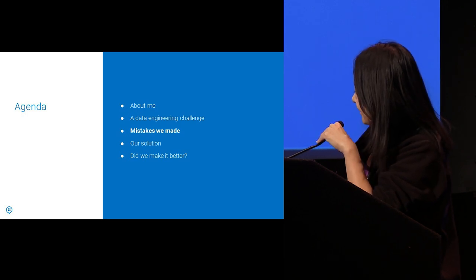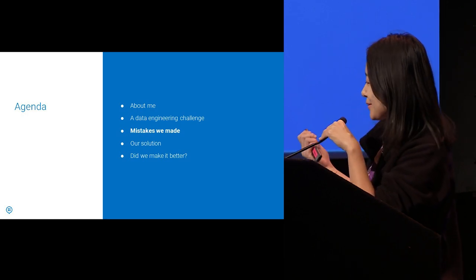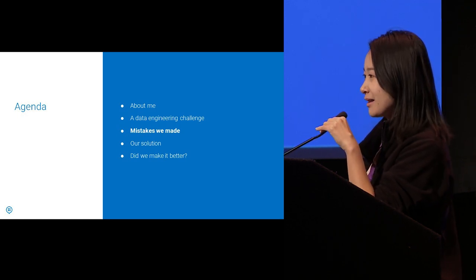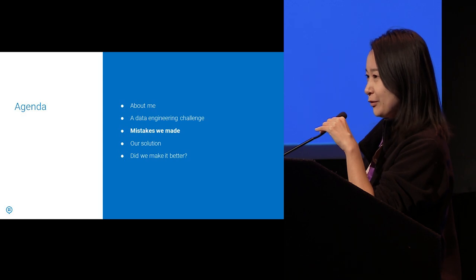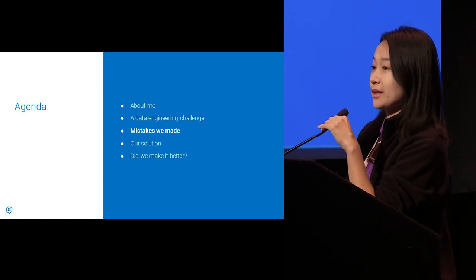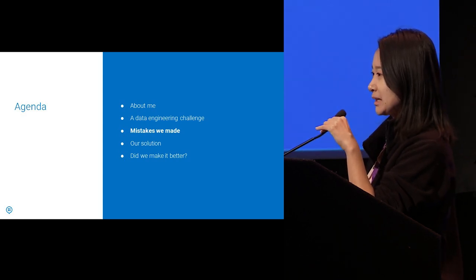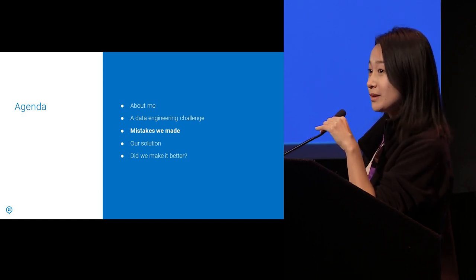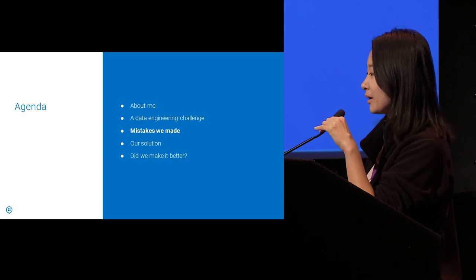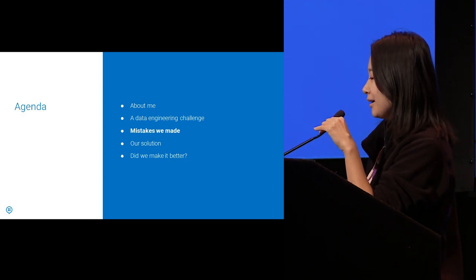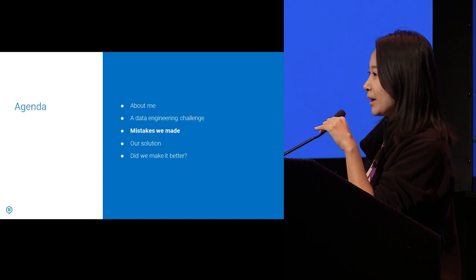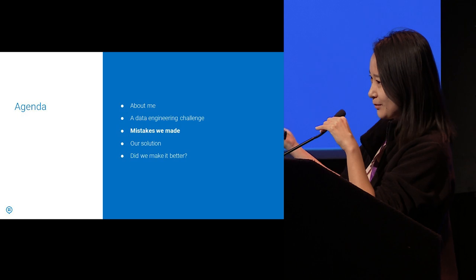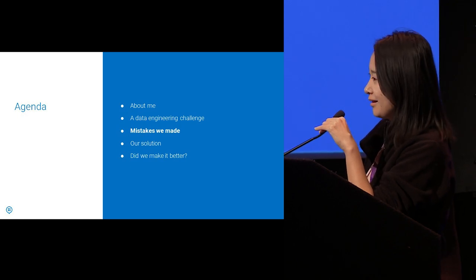Next up: the first time we tackled this problem, we made a few mistakes. Some historical context — at a startup, the first time you build out a financial data store is when you start making a sizable amount of money that warrants investing engineering resources. We thought at the time we only needed to support OLTP use cases, which, as you can tell from the previous slide, was a wrong assumption.